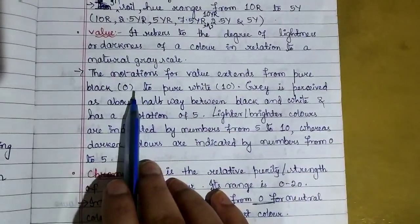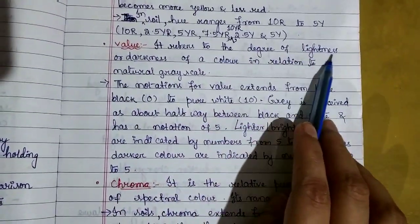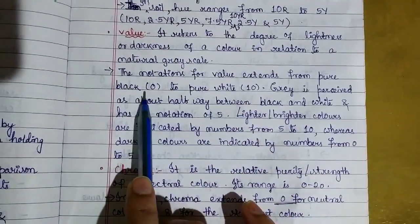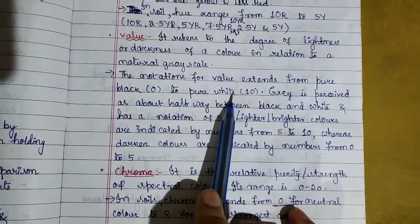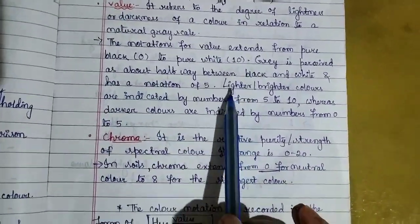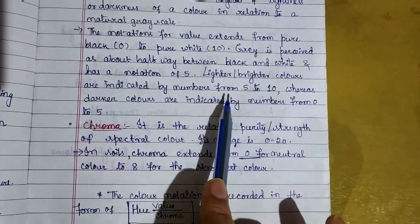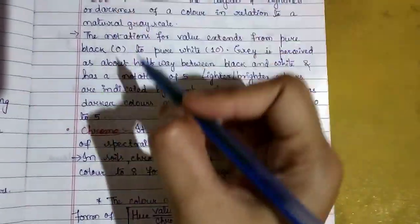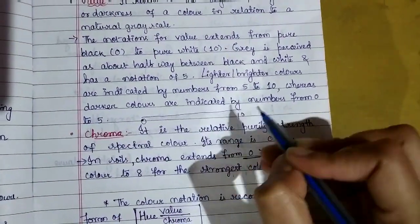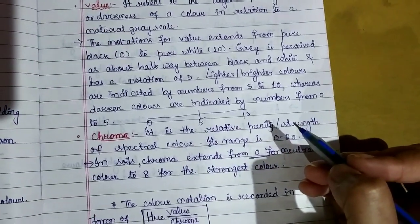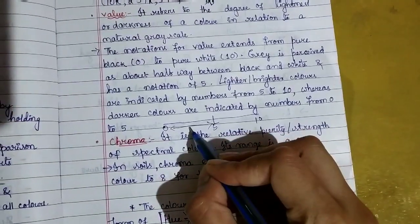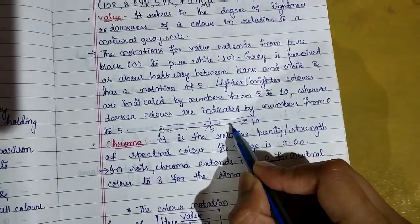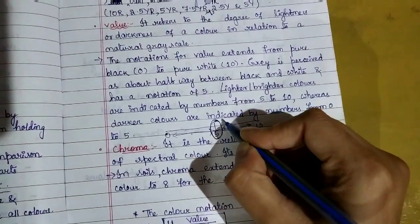Next coming to value. Value refers to the degree of lightness or darkness of a color. If a color is pure black, it is indicated by 0, whereas pure white is denoted by 10. Lighter or brighter colors are indicated by numbers from 5 to 10, whereas darker colors are indicated from 0 to 5. If we make a scale from 0 to 10, the middle number 5 is gray color.